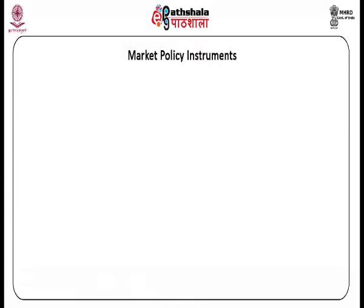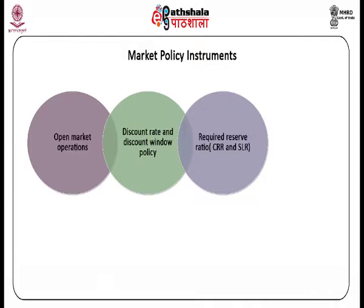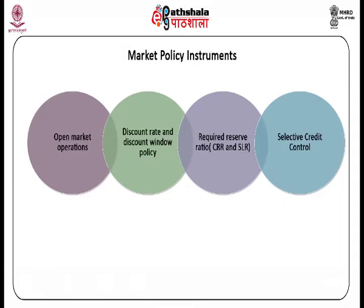Instruments of policy for the RBI are: open market operations; one, discount rate and discount window policy; two, required reserve ratio — CRR and SLR; three, selective credit controls. Changes in these instruments will change either the monetary base or money multiplier and hence change the money supply.